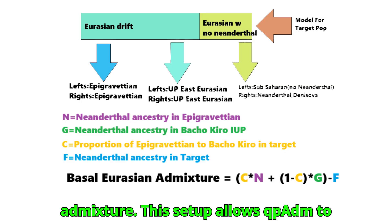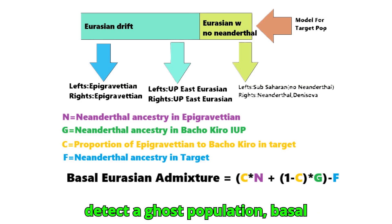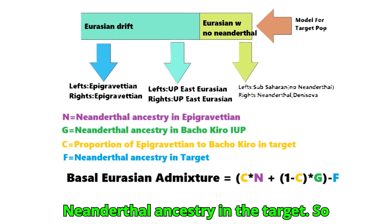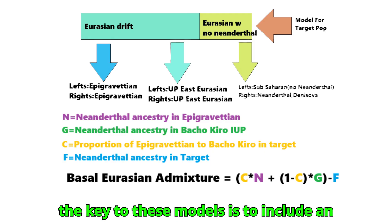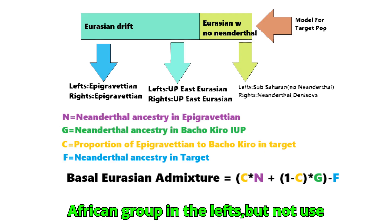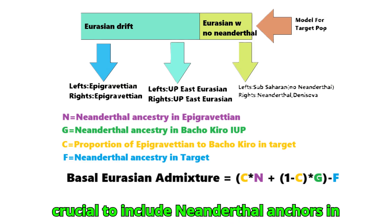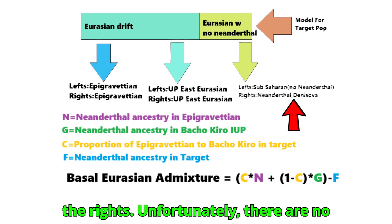This setup allows CubeADM to detect a ghost population — Basal Eurasian — whose effect is to reduce Neanderthal ancestry in the target. The key to these models is to include an African group in the left pops, but not use any African anchors in the rights. It is crucial to include Neanderthal anchors in the right.